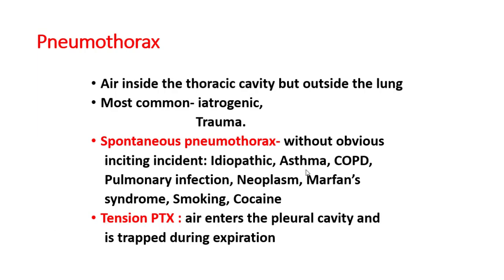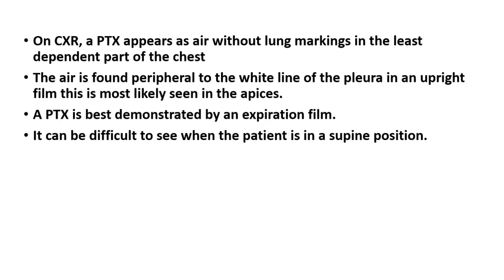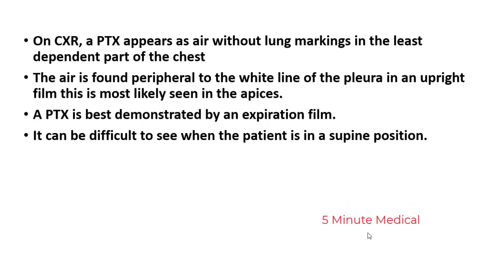Tension pneumothorax occurs when air enters the pleural cavity but during expiration it acts like a valve, so air continuously enters the pleural cavity in one direction, increasing the air volume and compressing the lung. On chest X-ray it appears as air without lung markings in the less dependent part of the chest, peripheral to the white pleural line.